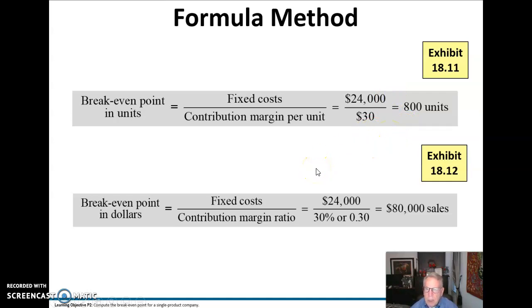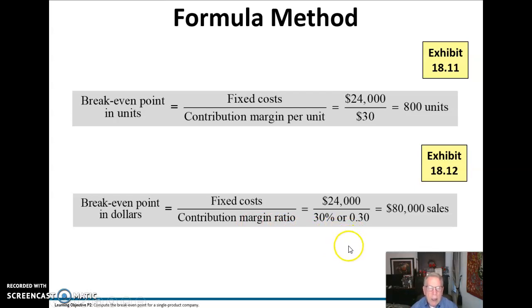We can also figure out the break-even point in dollars using a slightly different formula. Again we take the total fixed costs, but this time we divide by the contribution margin ratio. The contribution margin ratio was 30%, and we divide $24,000 of total fixed cost by that ratio, which equals $80,000 in sales. So I need to sell $80,000 of sales before I make any money at all.